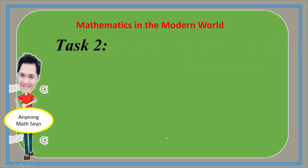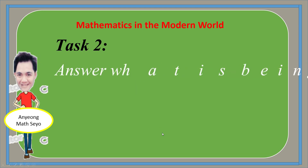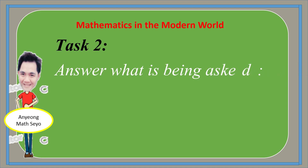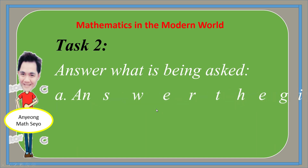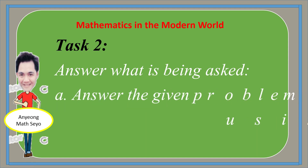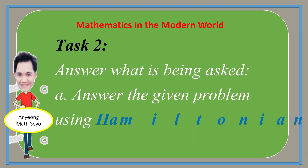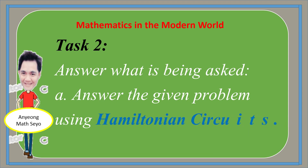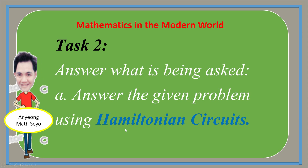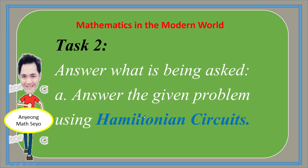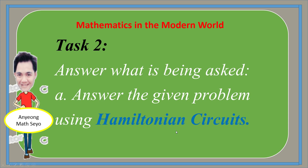For Task 2, you are going to answer what is being asked using the following matrix or instructions given. Letter A: answer the given problem using Hamiltonian circuit. Hamiltonian circuit is one topic in Module 7, so you may refer to Module 7 for Hamiltonian circuit.